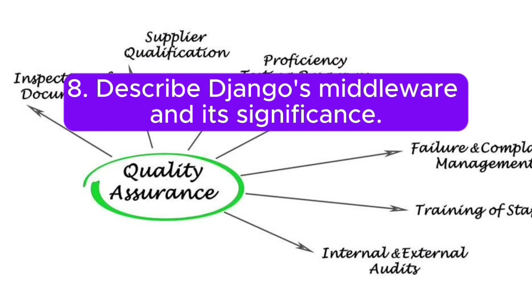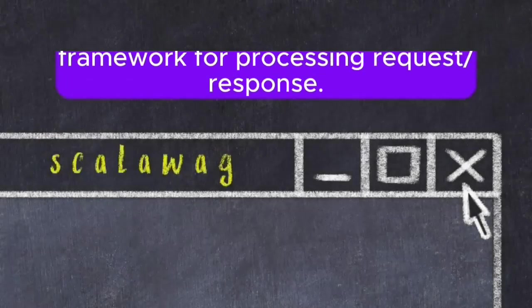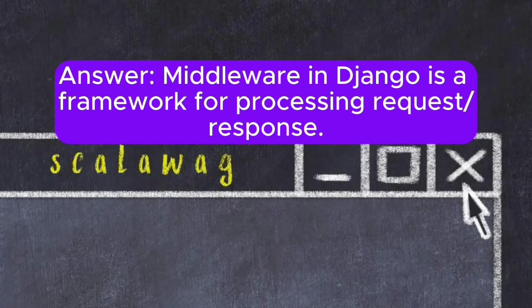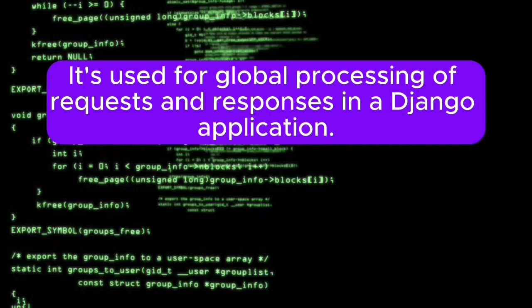Question 8: Describe Django's middleware and its significance. Answer: Middleware in Django is a framework for processing requests or responses. It's used for global processing of requests and responses in a Django application.